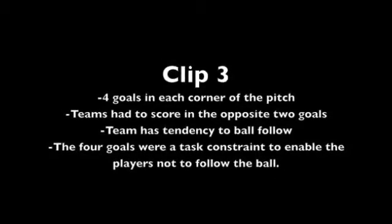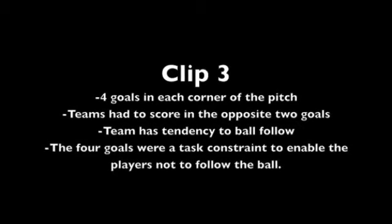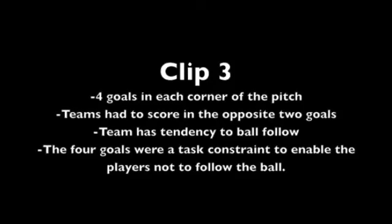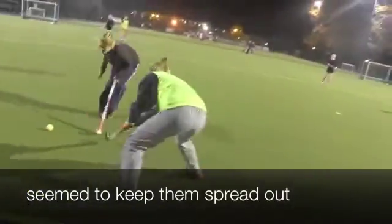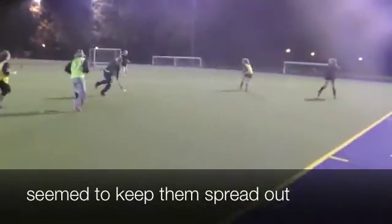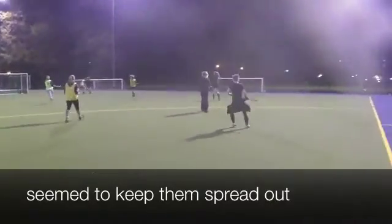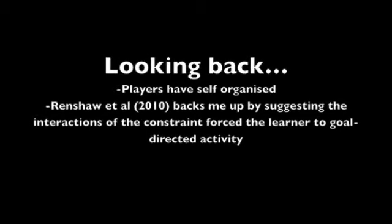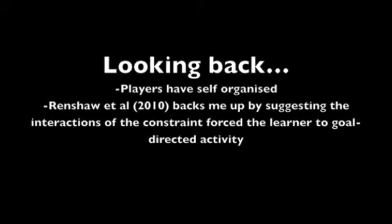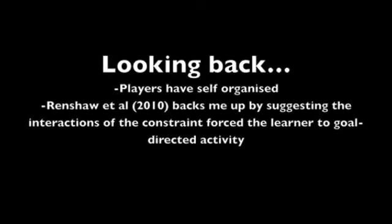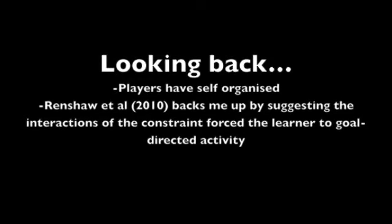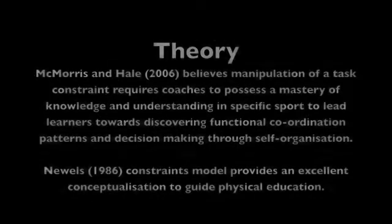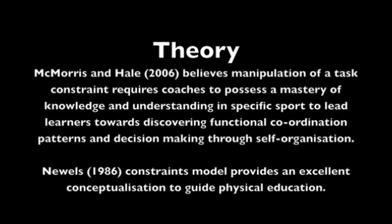This drill had four goals, each at the corner of the playing area. Both teams had to score in the opposite goal. This proved to be a successful task constraint. The team I was coaching have a tendency to follow the ball, so using the four goals I tried to enable them to spread out and have four points of goal direction. As you can see, they are self-organised as they have realised there are four points of scoring. Wenshaw et al. 2010 backs me up by suggesting the interactions of this constraint force the learner to seek a stable and effective movement pattern during goal-directed activity. This is shown when players understood they will have more chance of scoring if they use the space and are near all goals.